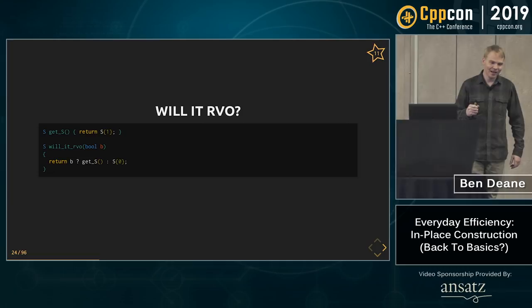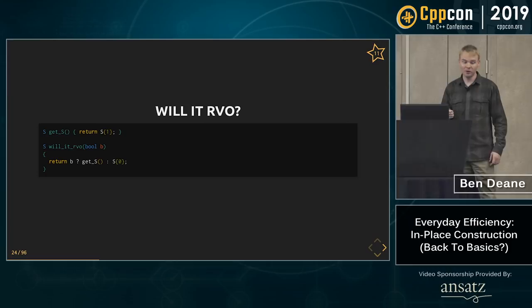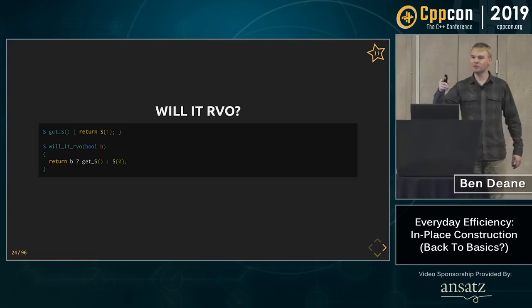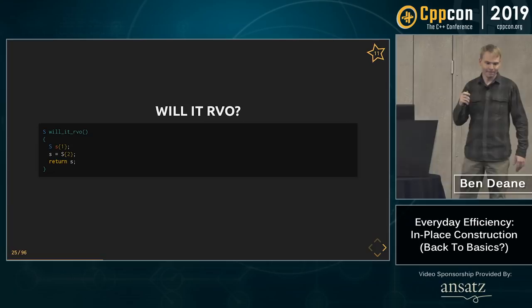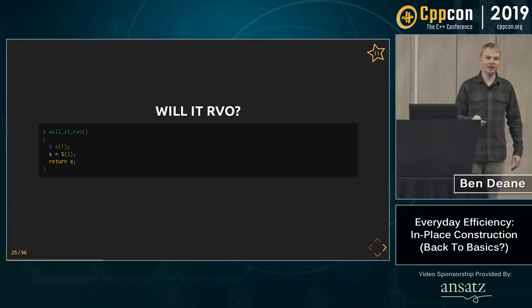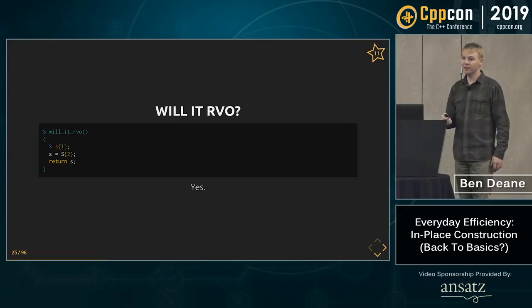How about this one? Similar to the previous. Yes — this time both sides of the ternary operator are rvalues, so the overall type returns an rvalue. We get copy elision. And this? Yes — this is plain named RVO. You name the thing, you return the thing. All compilers are fine with that.